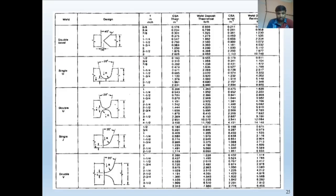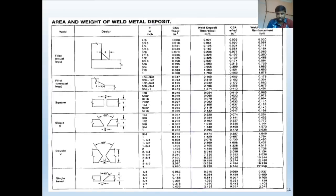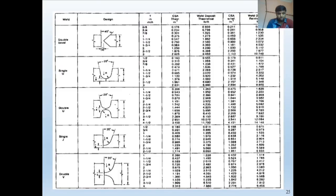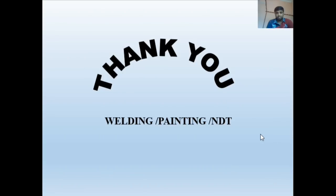You can find weld metal deposit weight per foot for all joint types — one side, two sides, groove joints — from these tables. That covers electrode consumable classification, their details, and specifications. Please let me know if there are any concerns. Thanks for watching — don't forget to share and subscribe to my channel.